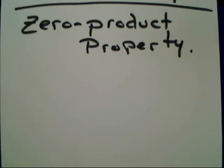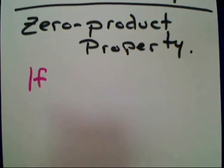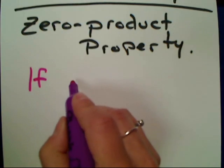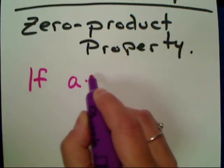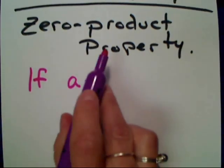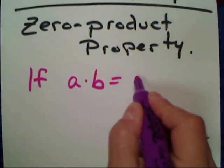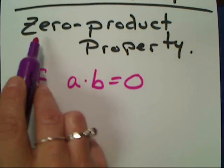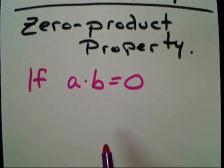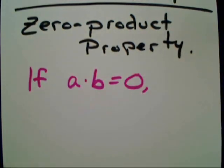The zero product property is a very simple property, and it allows us to do so much in math land — that's what's exciting about it. You guys might not agree, but I think it's fantastic and it's so simple. It simply says: if you have two numbers, A and B, multiplied together — so it's a product, multiplication — and it's equal to zero, thus it's called a zero product, a product that equals zero, something has to happen there.